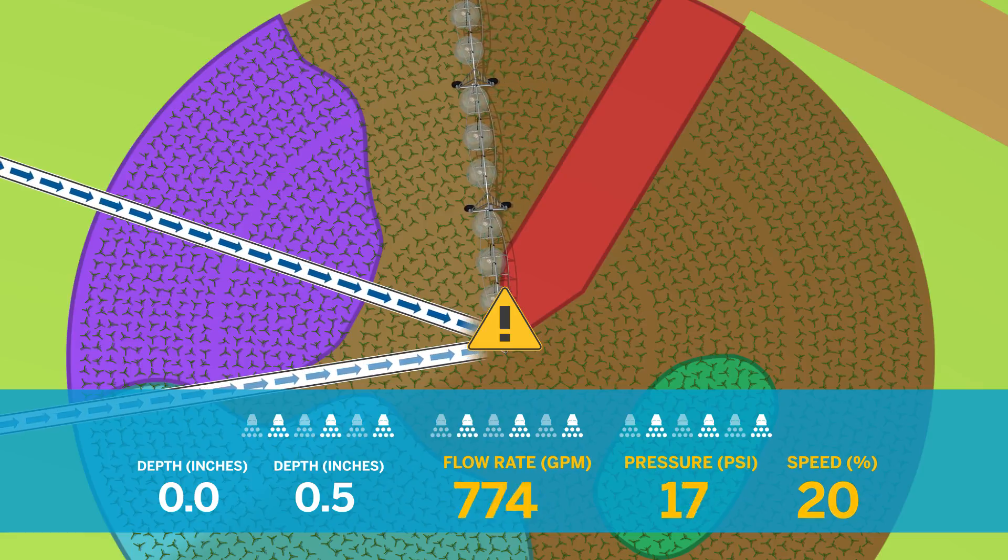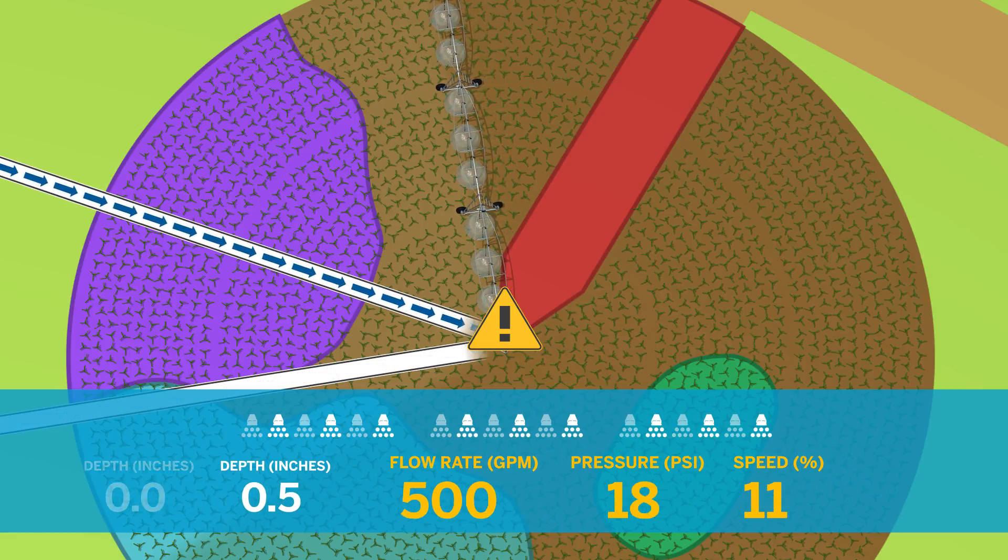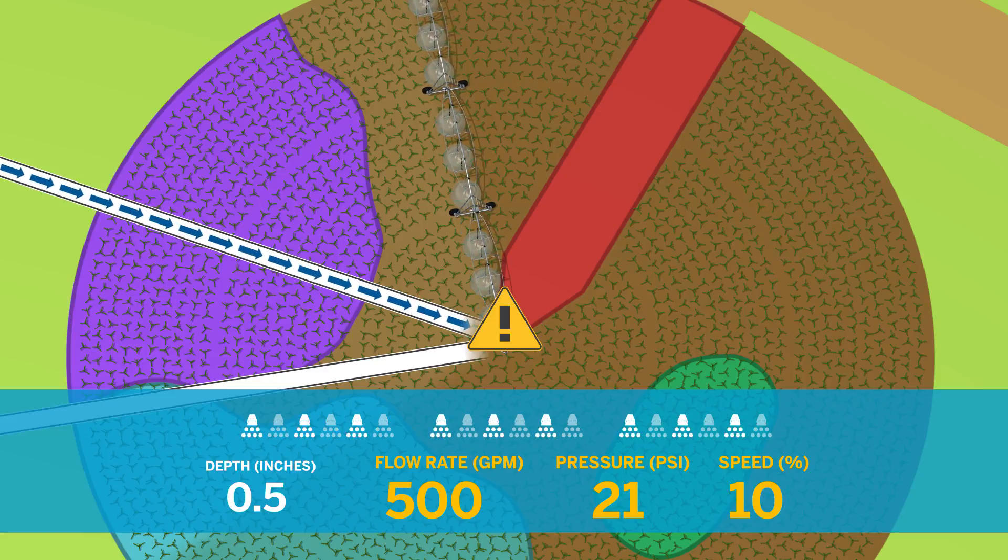If a pump fails, the system slows down and reduces its water output to apply the defined depth until pressure recovers.